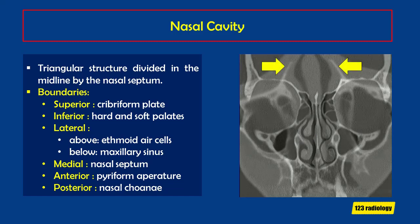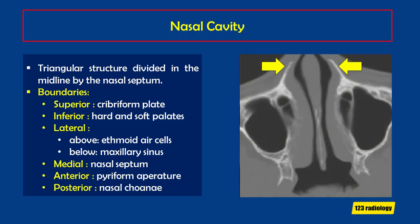If we look at axial images, you can see anteriorly the nose opens up at the piriform aperture. And if you look posteriorly, you can see the choana, which separates the nasal cavity from the nasopharynx.